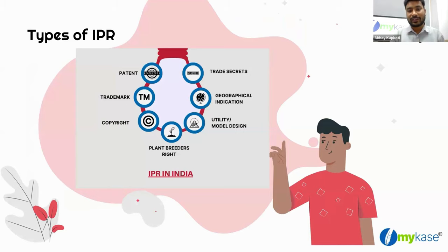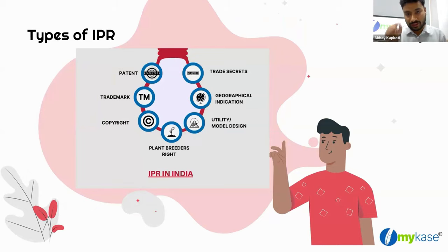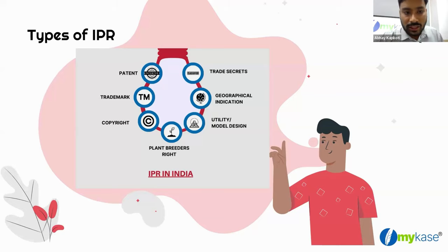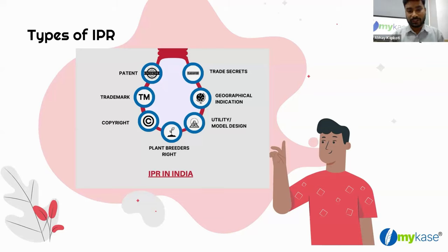A patent is process-oriented — whenever you are registering something that is a process. For example, Amazon had a patent for single-click shopping: from a single click you can buy a particular item on the Amazon app. This process was patented by Amazon, and in 2017 or 2018 it became available for the rest of the public. So if you are doing some kind of innovation, you can patent that process.